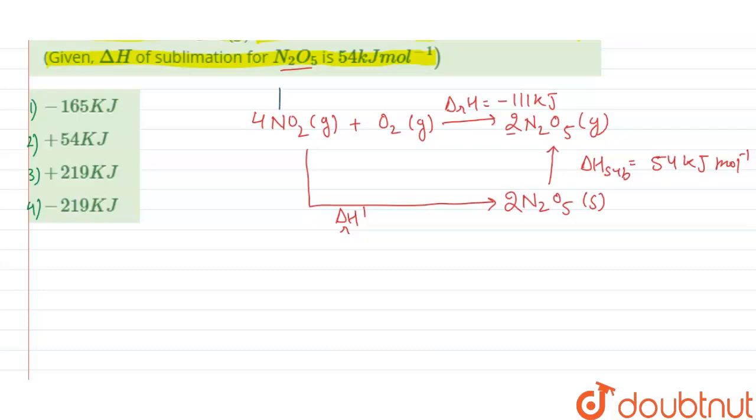Which means the heat change of this process will be equal to sum of the heat change of steps, that is this step and this steps involved. So we can write delta RH is equal to the delta H of sublimation plus delta H of reaction dash.